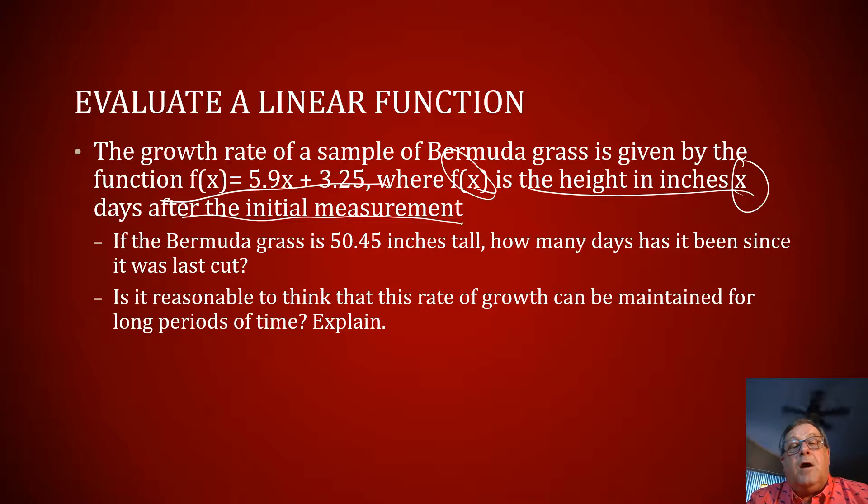However, if I'm going to solve this, then if f of x is the height of the grass in inches and the grass is 50.45, I can substitute that 50.45 for f of x. And then we just got 5.9x plus 3.25.